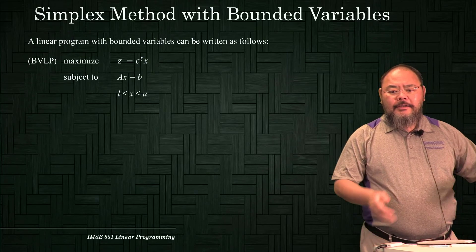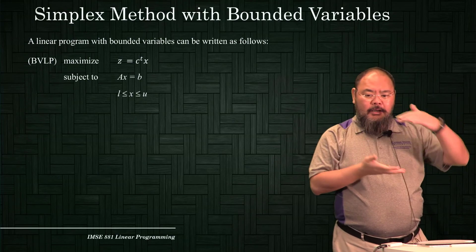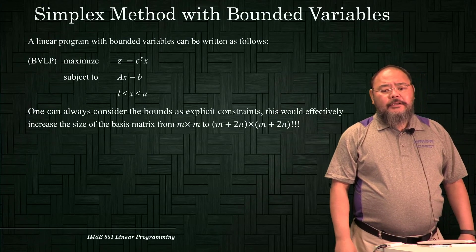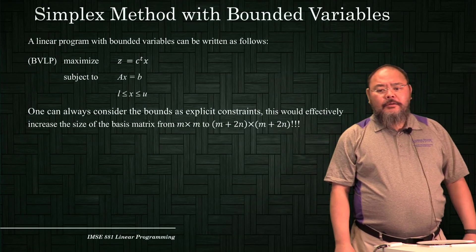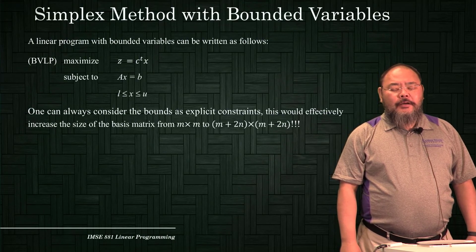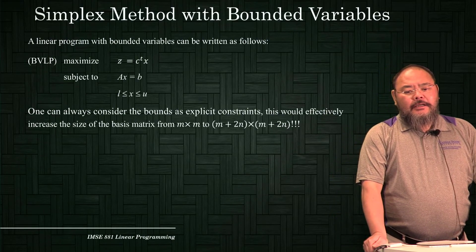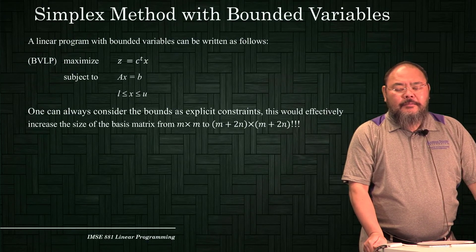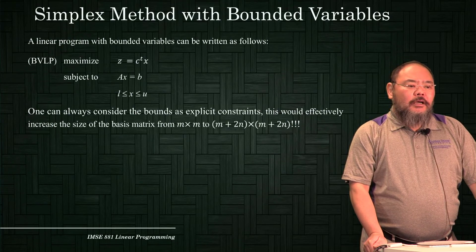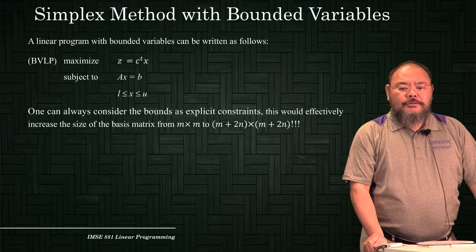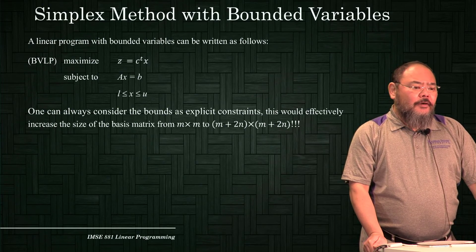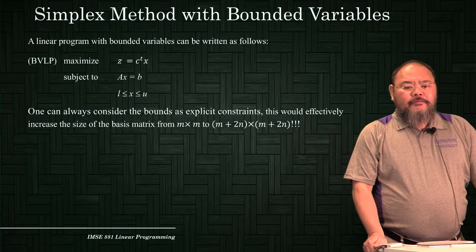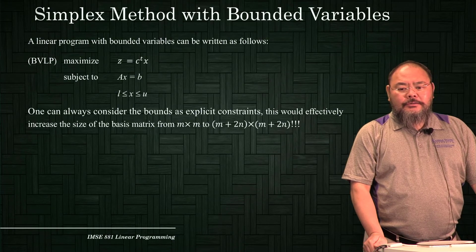Sometimes we also refer to the lower and upper bounds as box constraints — your decision variable is boxed within a certain region. We can always handle this type of problem by converting the bounds into explicit constraints added to the A matrix, but this greatly increases the size of our model. So for box constraints or bounded variables, we should use a specialized algorithm.